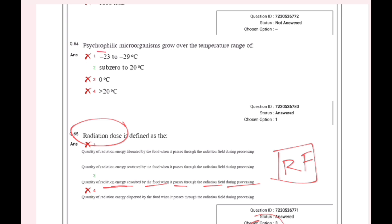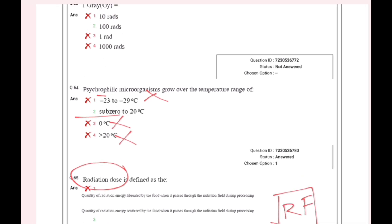Psychrophilic microorganisms grow over a temperature range. Psychrophils grow from minus 23 degrees Celsius. Zero degrees Celsius is not at all — it is sub-zero to 20 degrees Celsius.